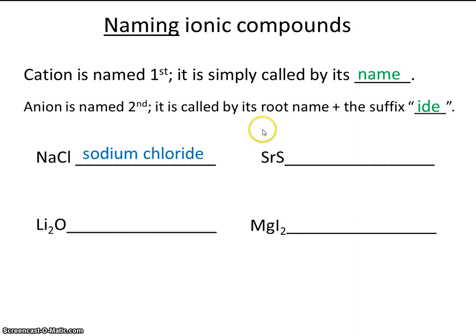Same thing here. We'll name this element first, and then this element second. Notice that the cation traditionally comes first, and the anion comes second. So essentially, you're providing the name of this element, which is strontium, and then you're looking at this element and just adding the suffix '-ide.' So this is strontium and sulfur. This would be called strontium sulfide.